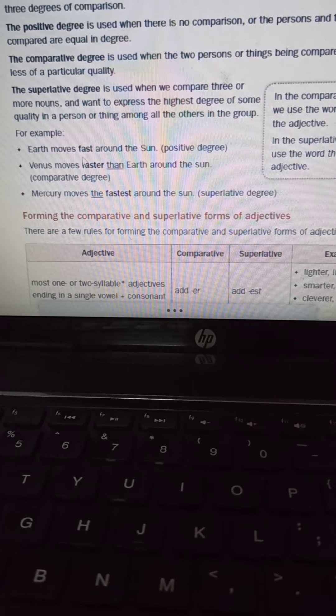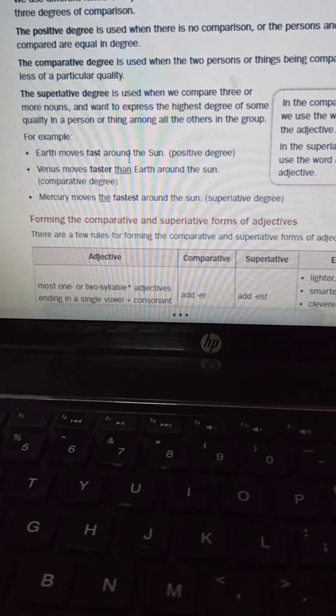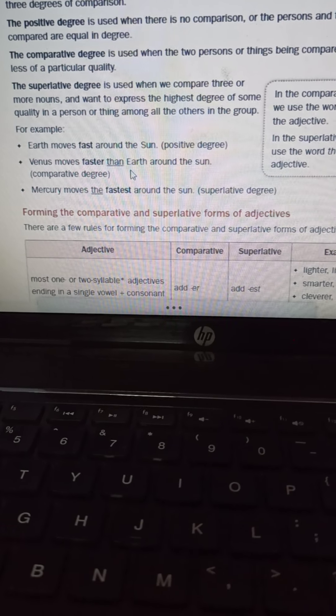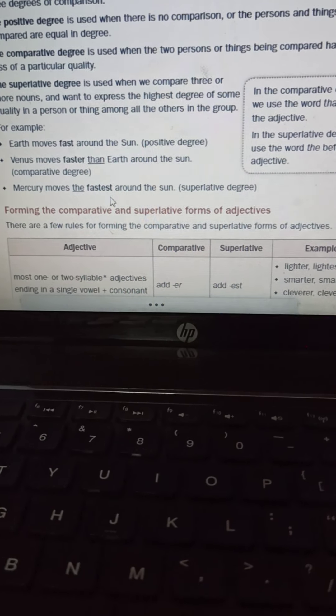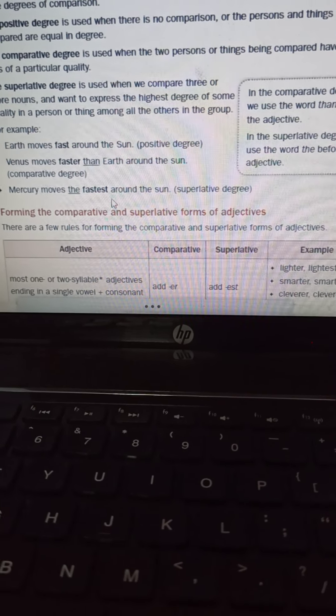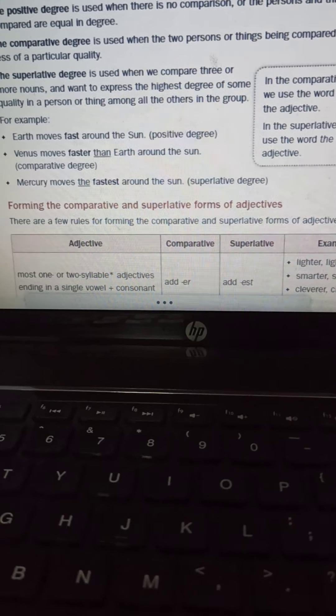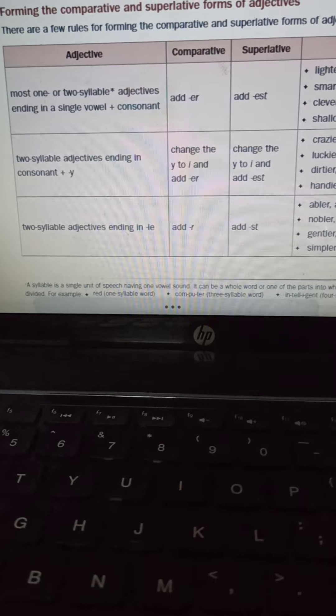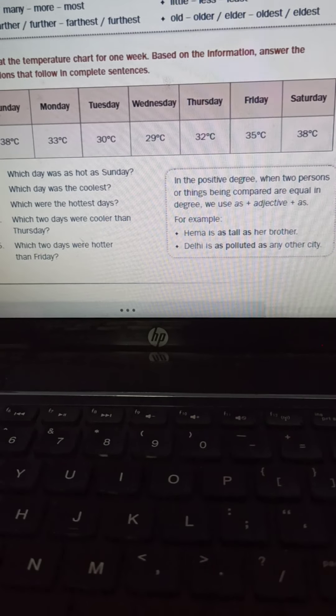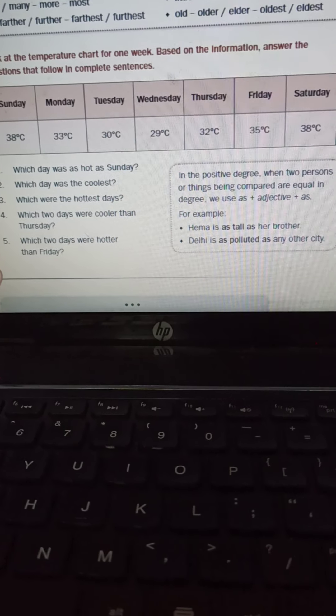So these are the three sentences where all the three degrees are given. The first is Earth moves fast around the sun - this is your positive degree. The second is Venus moves faster than Earth - this is your comparative degree. And the third is Mercury moves the fastest - this is your superlative degrees. Some examples are given of all the three degrees here. This is also an exercise based on degrees only.